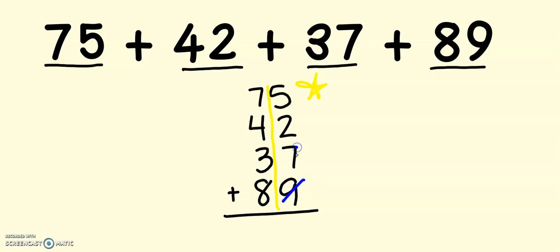9, 10, 11, 12, 13, 14, 15, 16, 17, 18, 19, 20, 21, 22, 23. So, I got 23 ones. I look in the tens place. I have 2 new tens. And I pull my 3 ones down to the bottom.